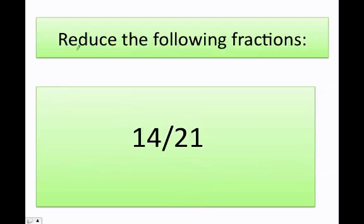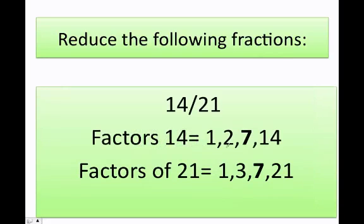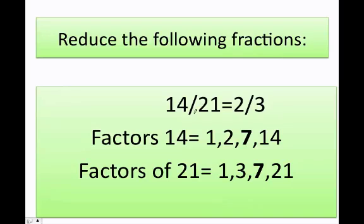How do I reduce this following fraction? What is the greatest common factor between 14 and 21? I find the factors of 14 and the factors of 21, and I can figure out that the greatest common factor is 7. By dividing 14 by 7 I get 2, and by dividing 21 by 7 I get 3.